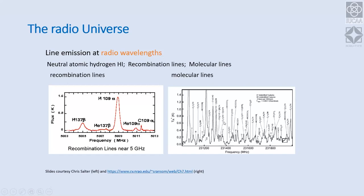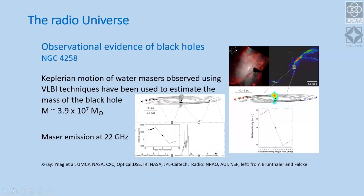In the millimeter-wave region, molecular lines from rotational and vibrational transitions are extremely important for studying the dense regions of the interstellar medium that collapse to form stars. Carbon monoxide transitions are among the most well-studied. The plethora of molecular lines that have been identified is illustrated here from a particular molecular cloud toward the center of our galaxy.